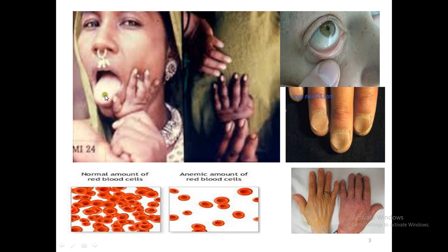You ask her to take out her tongue and you see it's pale looking. You pull down her eyelid and find that it is also rather pale looking. You examine her nails and find that they are very strange — spoon-shaped or concave nails. You keep your hand next to hers and find that her hand is also very pale.